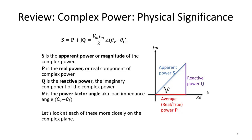Let's first start with a bit of review from our previous video. We reviewed the physical significance of the terms in complex power. S is the apparent power, or the magnitude of our complex power written in polar form. P is the real power, or the real component of our complex power — that's the power we can actually use. Q is the reactive power, or the imaginary component. And theta is our power factor angle.